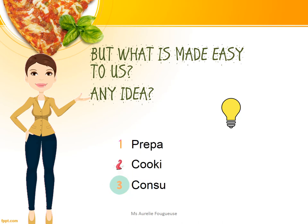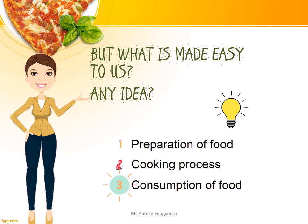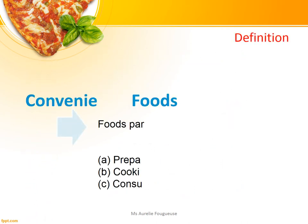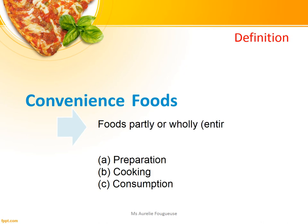Firstly, it's the preparation of food. Secondly, the cooking process is also facilitated. And thirdly, the consumption of food is also made easy for us. So we can define Convenience Foods as foods that have been prepared partly or wholly by the food manufacturer to facilitate the ease of preparation, cooking and consumption.